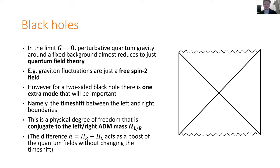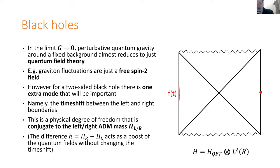The time shift is a physical non-local degree of freedom conjugate to both the left and the right ADM masses of the black hole. If I act with the left or right ADM mass, that evolves the right boundary forwards, shifting the state at right boundary time T=0 to T=epsilon, and that shifts the time shift between the two boundaries because we changed the right time and not the left. The difference of the two ADM masses — H_right minus H_left — where we evolve the right boundary forwards and the left backwards, does not change the time shift. All it does is act as a boost of the state of the quantum fields in the spacetime.